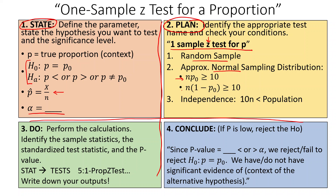To check for a normal sampling distribution, we verify two conditions: n times p-naught and n times (1 minus p-naught) must both be greater than or equal to 10. The third condition is independence: 10 times our sample size must be less than the size of our population.